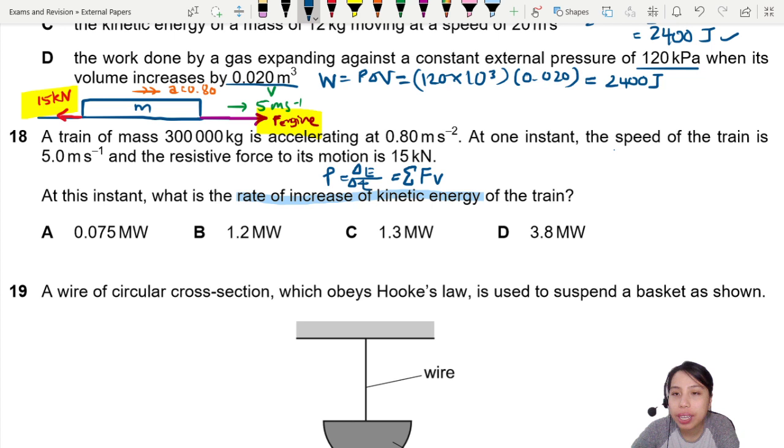Net force of a train here, you can use Newton's second law, equals to M times A. So we don't know the engine's force. It's okay. We got M, we got A, so we can calculate the net force. So this will be 300,000 times 0.8. That's our acceleration.